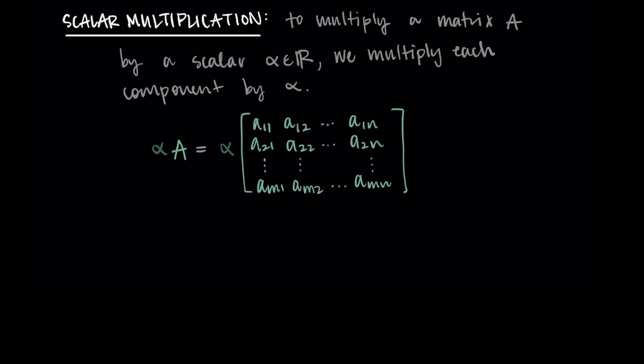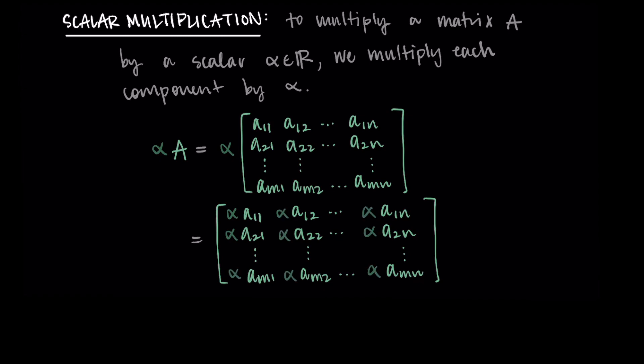Then we just distribute alpha into each of the entries. So we'd have alpha·a_11, alpha·a_12, alpha·a_21, etc. to fill in the whole matrix. Pretty straightforward - you just multiply all of the elements by the scalar.